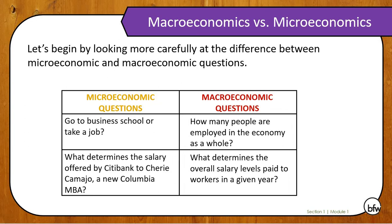Now let's look at the differences between micro and macroeconomics. Microeconomics focuses on small-scale things that involve individuals or specific businesses. Macroeconomics looks at how the economy as a whole operates. For example, microeconomic questions might be: should someone go to business school or take a job, and what determines the salary offered by Citibank to Sherry, a new Columbia MBA? Those focus on an individual or a specific business. Macroeconomic questions might be: how many people are employed in the economy as a whole, and what determines overall salary levels paid to workers in a given year? This class is macroeconomics, so we're going to look at the economy as a whole.